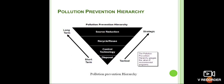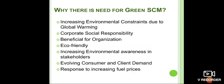The pollution prevention hierarchy, when pursuing sustainability, ranks environmental actions as: source reduction, then recycle and reuse, then control technology, and lastly disposal. The pollution prevention hierarchy gauges the value of environmental programs.